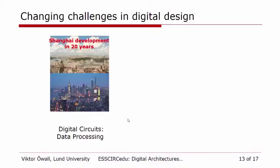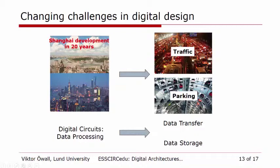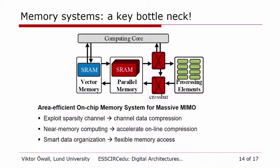We have a different ballpark now. If you look at Shanghai 20 years ago — still a big city, but not like today. Compared to what we did 20 years ago when we mostly did number crunching, today we see traffic problems and parking problems — and we can compare that to our field, where data transfer is increasingly more important and so is data storage. So we have also designed a memory system to take away the burdens of this in Massive MIMO. We explore channel sparsity because the channel matrices are pretty sparse, so we compress channel data, do near-memory computing, online compression, smart data organization, and flexible memory accesses. This is crucial to make Massive MIMO a competitive technology.